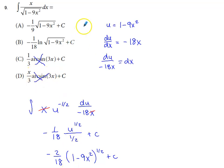We're going to have to do a U substitution to evaluate this. So if I let U equal what's under the root, and then I take the derivative of U with respect to X, I get negative 18X.